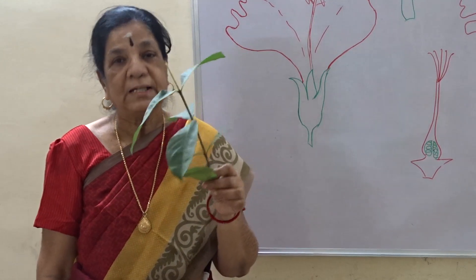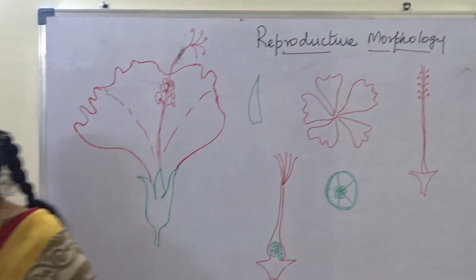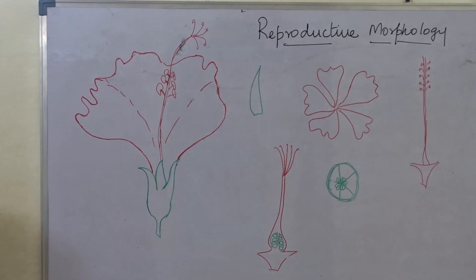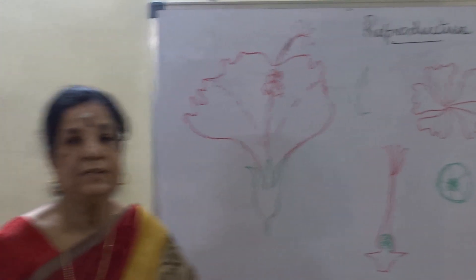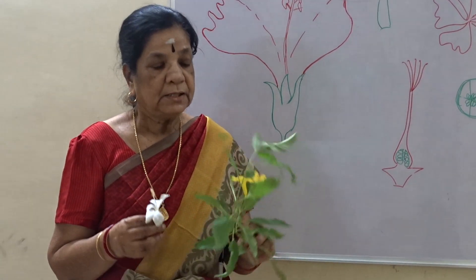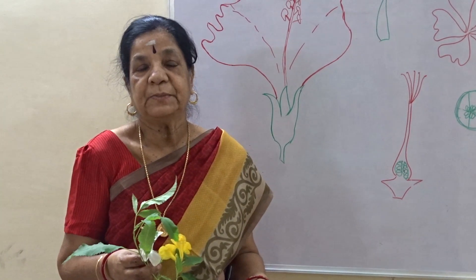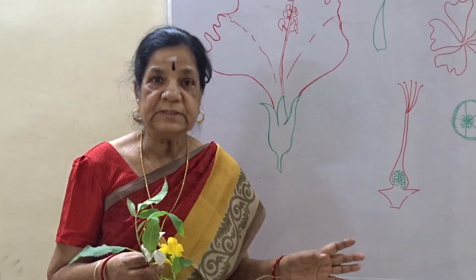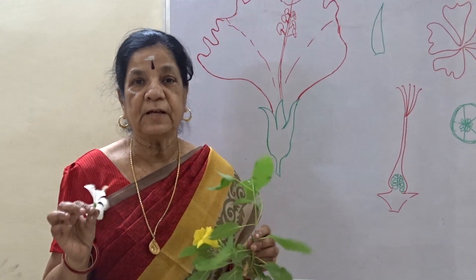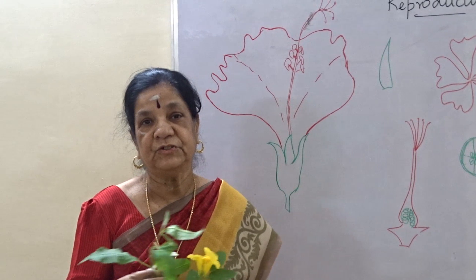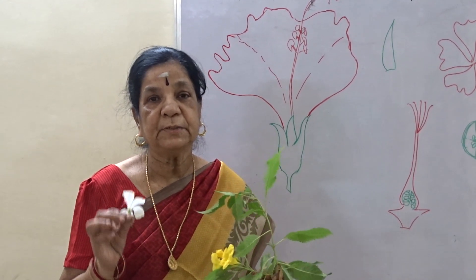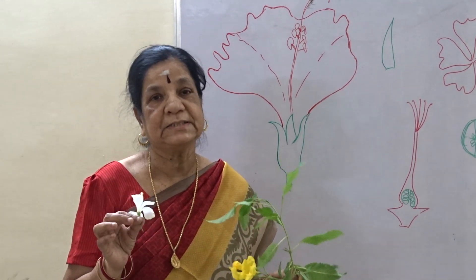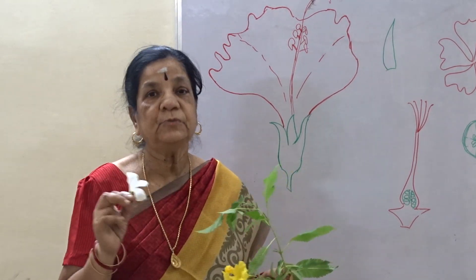Next we will move to reproductive morphology. Reproduction is the continuation of the species. In the parts of the plant, the leaf and stem portion are included under vegetative morphology, and the structure of the flower is included under reproductive morphology. In a given plant, the reproductive part is the flower, and this flower in turn forms the fruits and seeds — so these are all included under reproductive morphology.